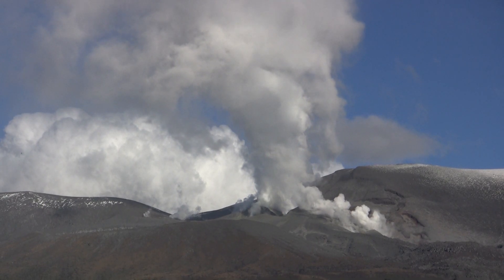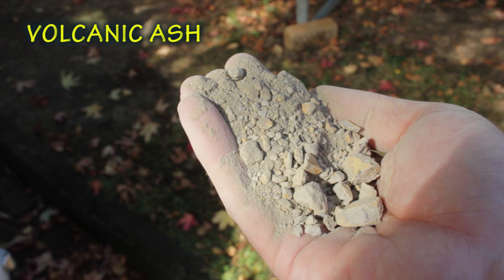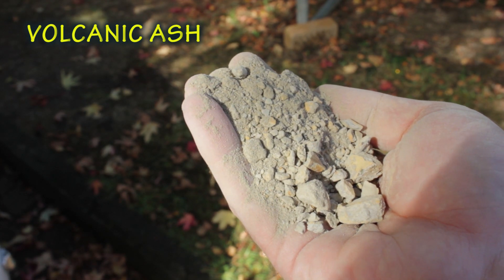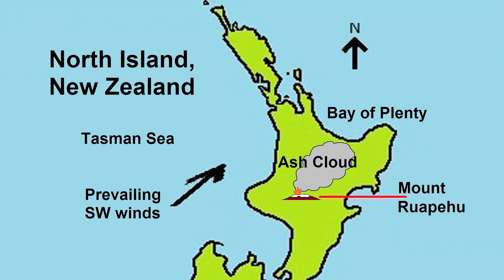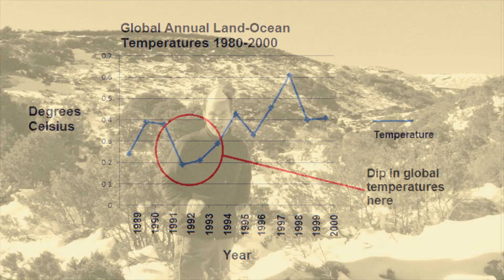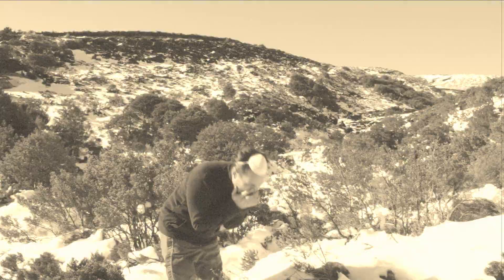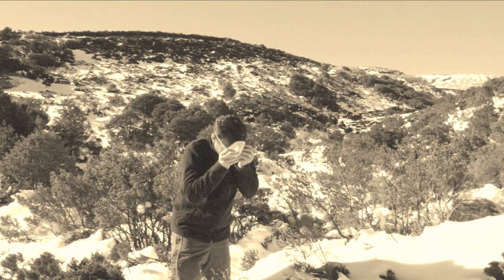Volcanoes also emit a lot of airborne material. Ash is debris less than two millimeters in diameter. Ash clouds can reach a height of 50 kilometers and can be carried a long way by wind. Ash can stay in the atmosphere causing global variations in weather patterns. Ash falls do not cause many deaths but can lead to breathing difficulties.